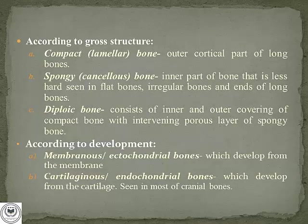Another type of classification is according to gross structure. They are of three types: compact, spongy, and diploic. Compact bone, also known as lamellar bone, forms the outer cortical part of long bones. Spongy or cancellous bone is the inner part of the bone that is less hard and is seen mainly in flat bones, irregular bones, and the ends of long bones. Diploic bone consists of inner and outer coverings of compact bone with an intervening porous layer of spongy bone — it is basically spongy bone sandwiched between two layers of compact bone, and is seen in the majority of cranial bones.